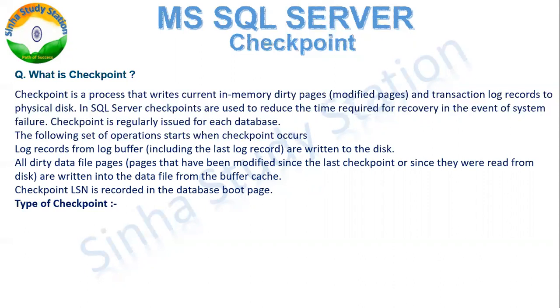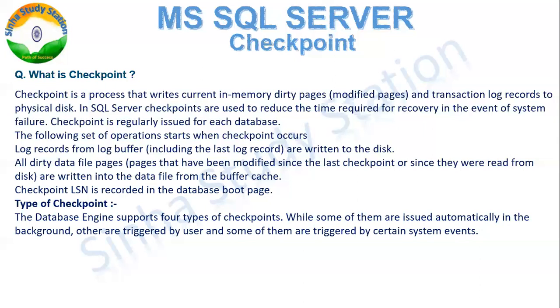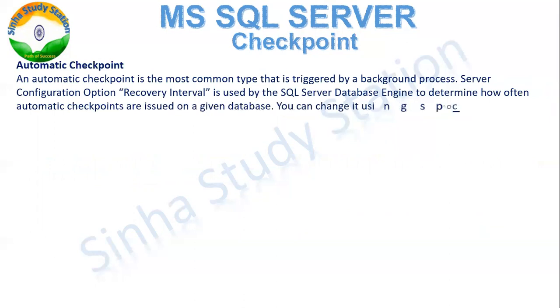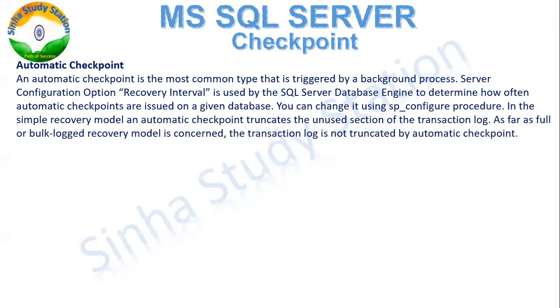Now let's look at the types of checkpoints. Checkpoints are of four types: some are issued automatically in the background, others are triggered by the user, and some are triggered by certain system events. The first type is the Automatic Checkpoint. An automatic checkpoint is the most common type, triggered by a background process using the server's configured recovery interval option.